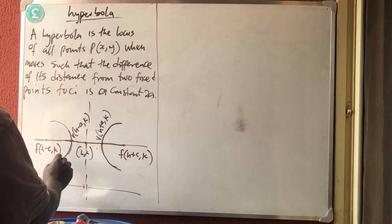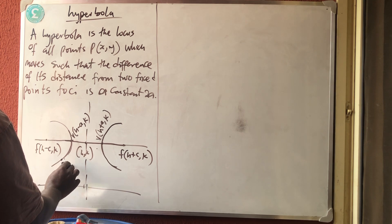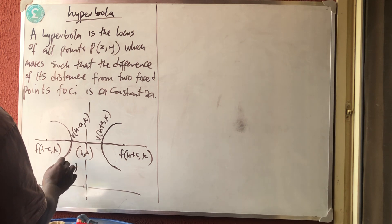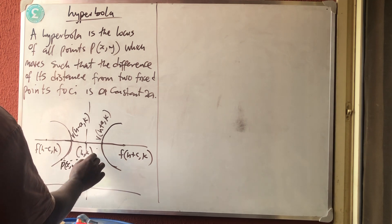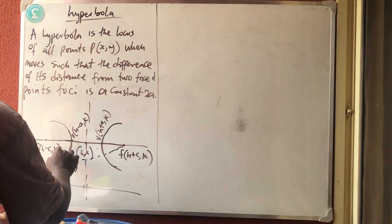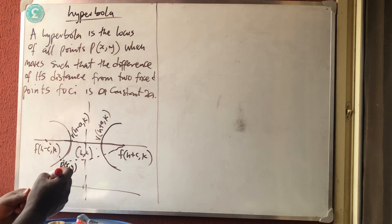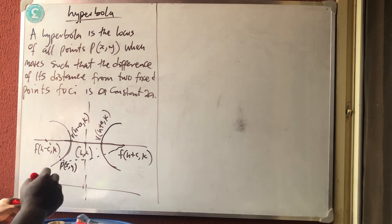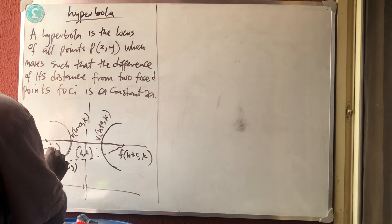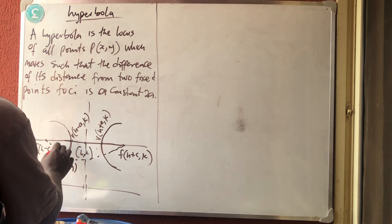So if I have a point P, which is (X, Y), they say that the distance from that point to each fixed focus — if you subtract them — you are going to get 2A.